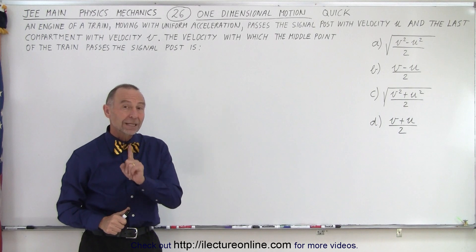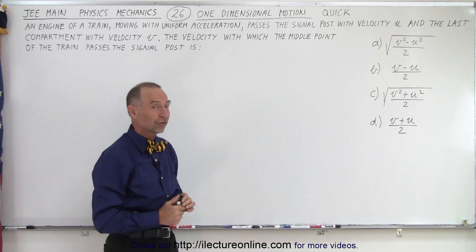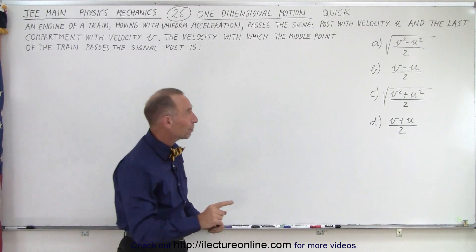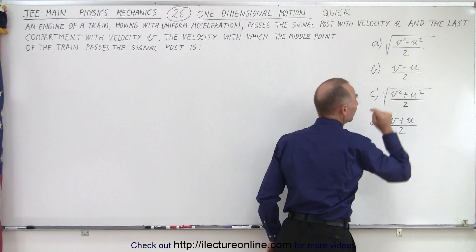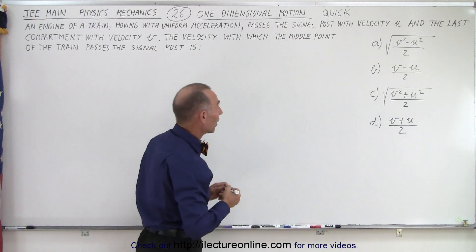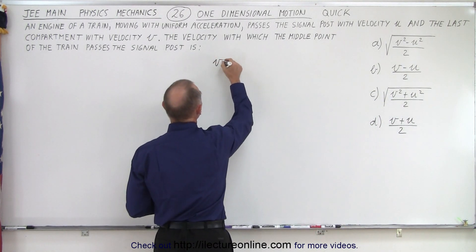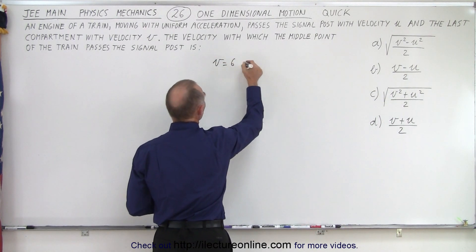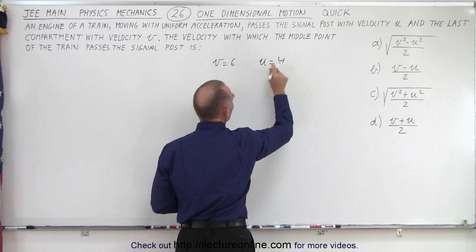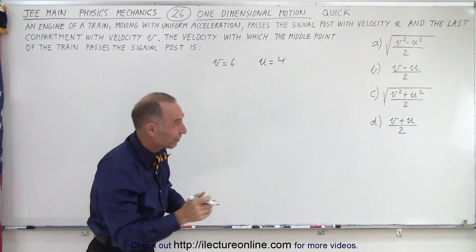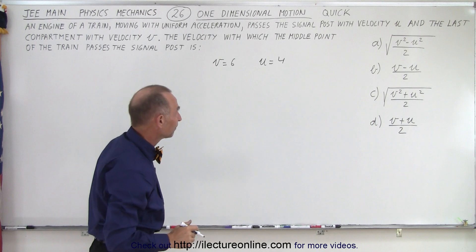Right away, we can eliminate two of the four answers. I would not expect to see a negative there. Let's say that V equals six and U equals four. This is one of the methods by which we can quickly figure out if the answers are plausible or not.